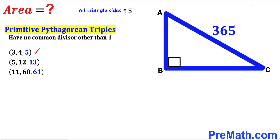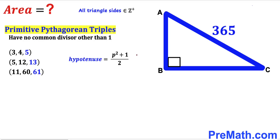Here are examples of primitive Pythagorean triplets. In the first example, 3, 4, 5 — they have nothing in common. Likewise in 5, 12, and 13, they have nothing in common other than one. And finally in the last example, 11, 60, and 61, they have no common divisor other than one. Now in the next step I am going to come up with the rule to figure out the two unknown sides. The formula we will use: the hypotenuse is always equal to (p² + 1) / 2.